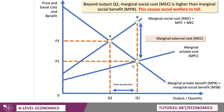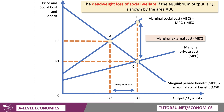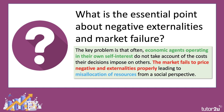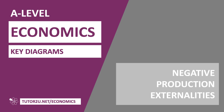Let's put some labels on — it's always better to use letters than shade in an exam. The deadweight loss of social welfare, when the equilibrium is Q1, is shown by the area A, B, C. The essential point about negative production externality market failure is that economic agents — an airline, a chemical factory, an intensive farming operation — operating in their own self-interest, for example profit-maximising firms, often do not take into account the costs their decisions impose on third parties. If the market fails to price externalities properly, that leads to a misallocation of resources from a social perspective.